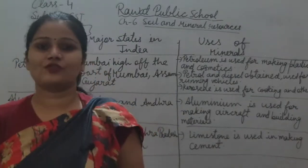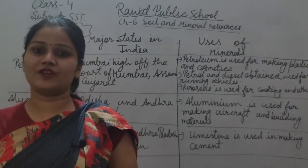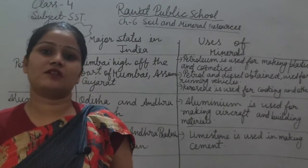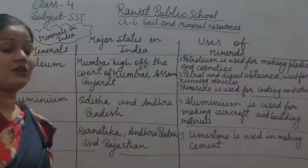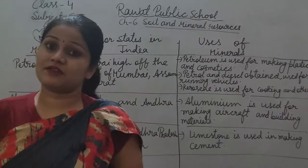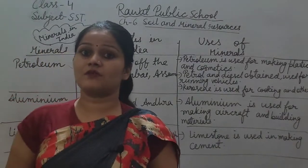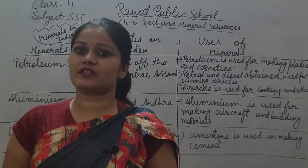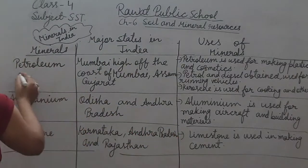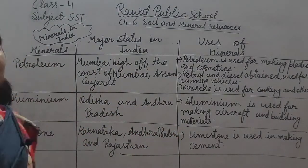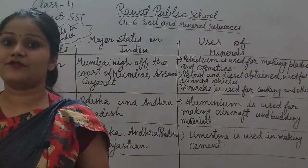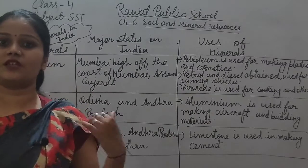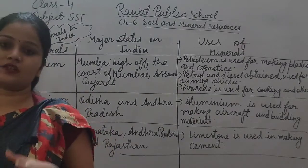Good morning students. Today we are going to start the next three minerals of chapter number six, Soil and Mineral Sources. In the previous class we discussed about three minerals: iron, copper and coal. In this class we will discuss about the next three minerals — petroleum, aluminium and limestone — where these are found and what are the uses of these minerals.